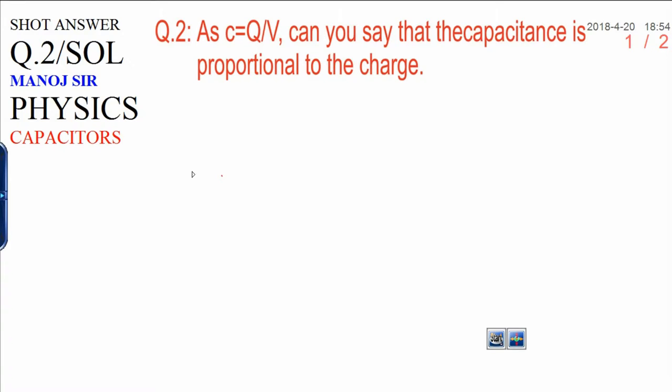Dear students, today I am going to discuss a short answer type question from the chapter on capacitors, that is question number 31 in SC Verma. The question is: as capacitance C is equal to Q upon V, can you say that capacitance is proportional to the charge?